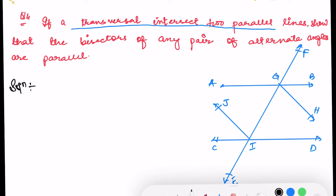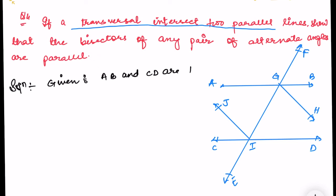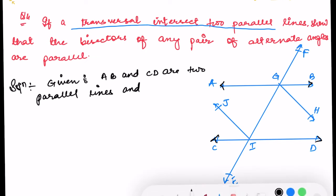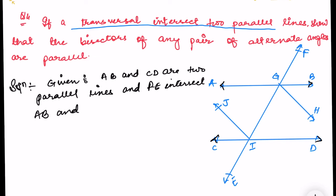Solution. Let us start by writing what is given. AB and CD are two parallel lines. AB and CD are two parallel lines, and FE is a transversal intersecting AB and CD at points G and I respectively.